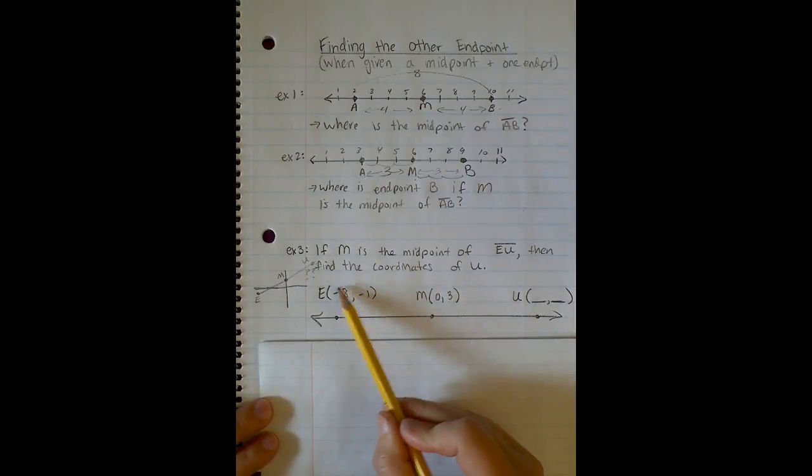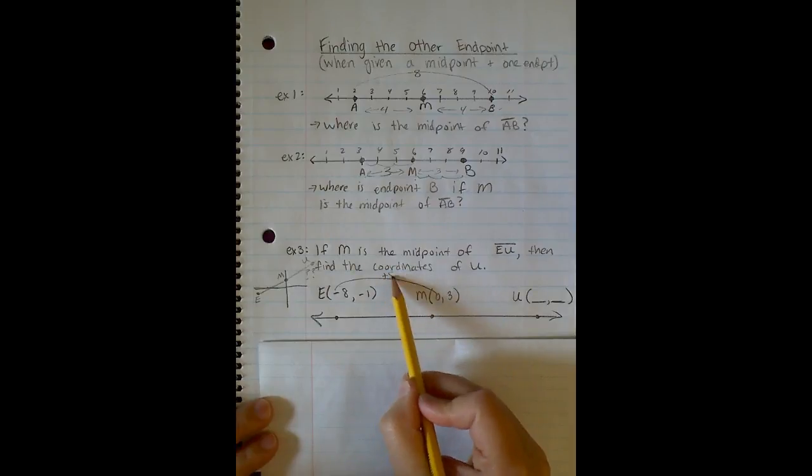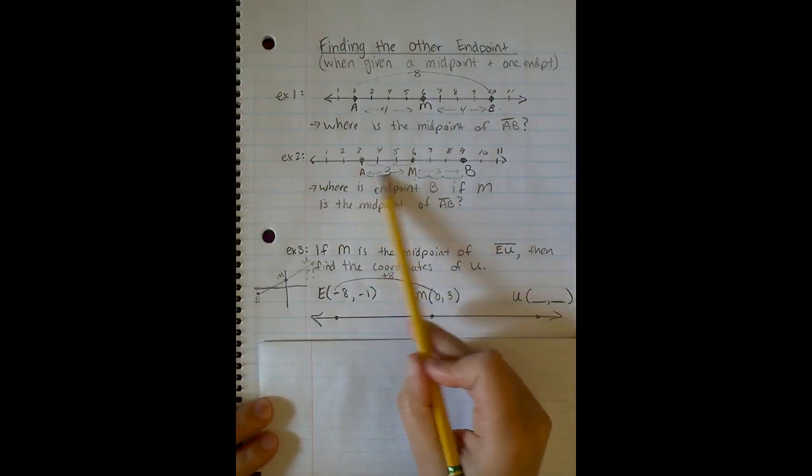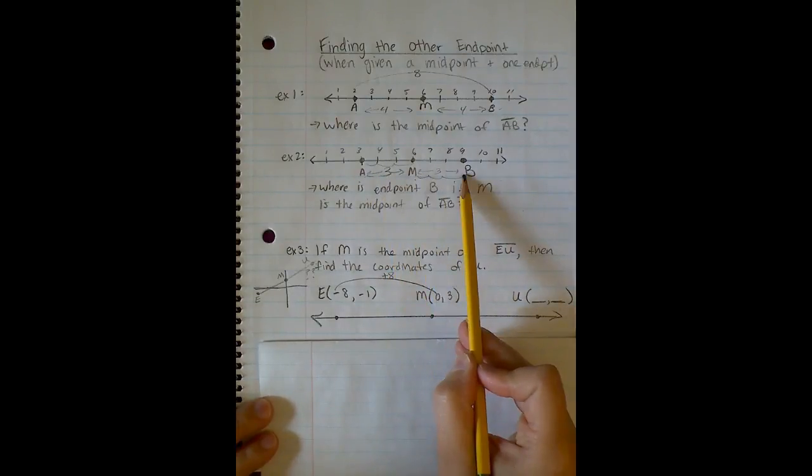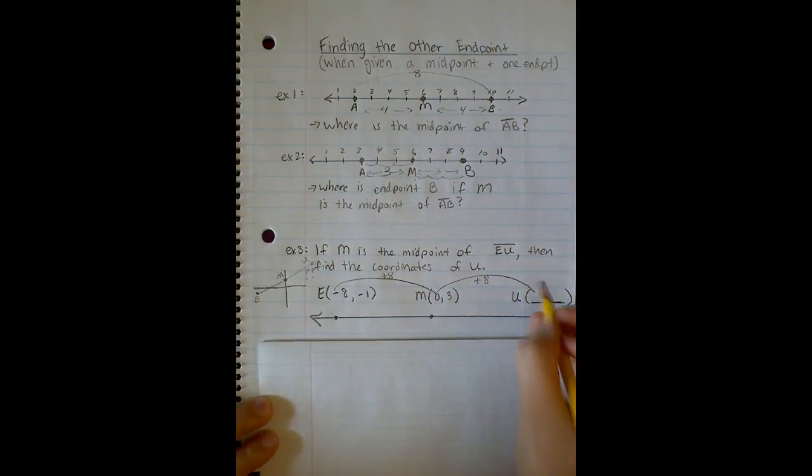For my X values, negative 8 to 0 is adding 8. So negative 8 to 0, the pattern is plus 8. Just like we did up here, I'm going to do the exact same thing to find the X value of U. So from 0 to the X coordinate of U, I must have to add 8. And 0 plus 8 is 8.